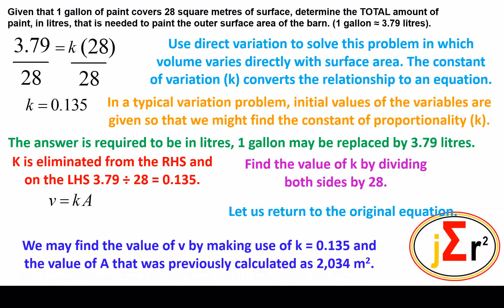We may find the value of V by making use of the fact that k is equal to 0.135 and the value of A that was previously calculated as 2,034 square meters. The rest of the problem is simple. We know the value of k from right here, and in a previous video we were required to calculate the value of the total surface area, which we have to be 2,034. Substitute them in their respective places and that's the end of the problem.